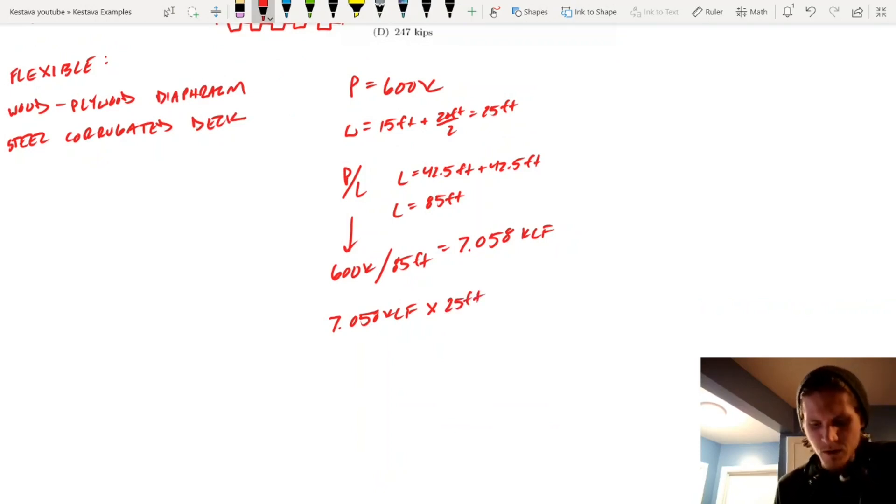So, now you have 7.058 klf times 25 feet. Our units all work out. So, kips per lineal foot times 25 feet gets you kips, and that is just going to equal, we can call it P sub A, so the force at wall A is going to equal 176.5 kips.